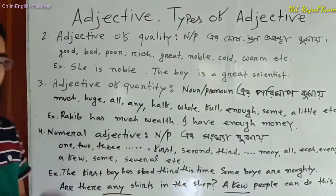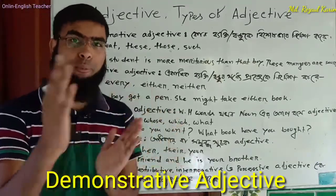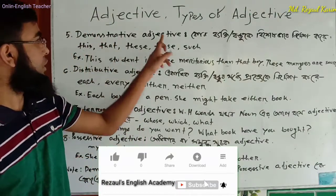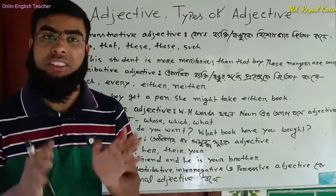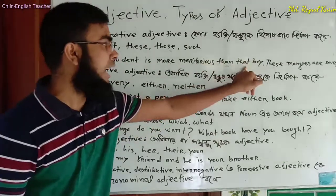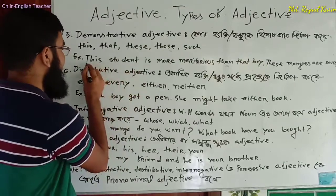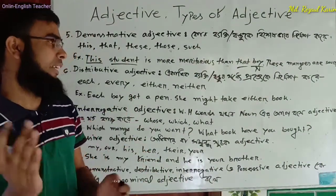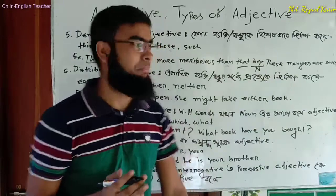Now demonstrative adjective — these are actually pronouns used as adjectives. Demonstrative adjectives include: this, that, these, those, such. Example: This student is more meritorious than that boy — 'this' qualifies the noun 'student' and 'that' qualifies 'boy,' so both are demonstrative adjectives. These mangoes are sour — 'these' is a demonstrative adjective modifying 'mangoes.'